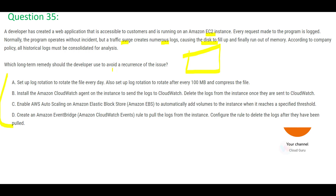The first option says to do log rotation. How it works is that within the EC2 instance, logs are stored in EBS, because each EC2 instance has an EBS volume associated with it. Log rotation within EBS itself will not work because EBS is getting full — so this option is wrong.